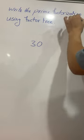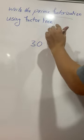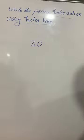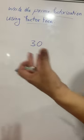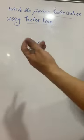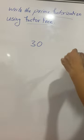In the question over here we are asked to write the prime factorization of the number 30 using factor tree. Prime factorization is an expression which is written as the product of prime factors. Now we have to first find the prime factors of 30 and write its prime factorization.